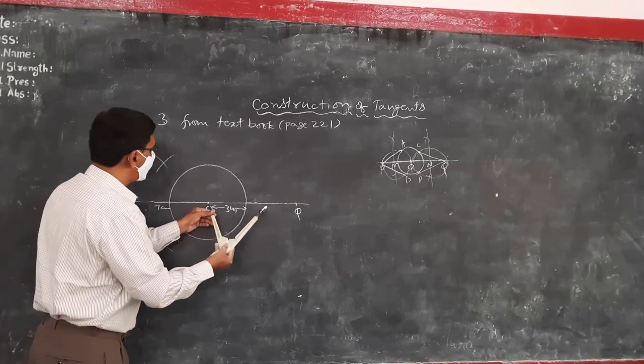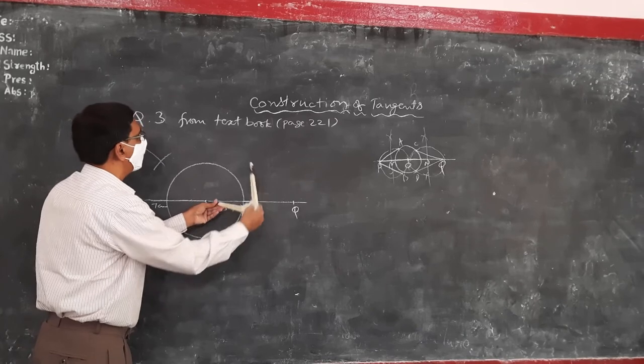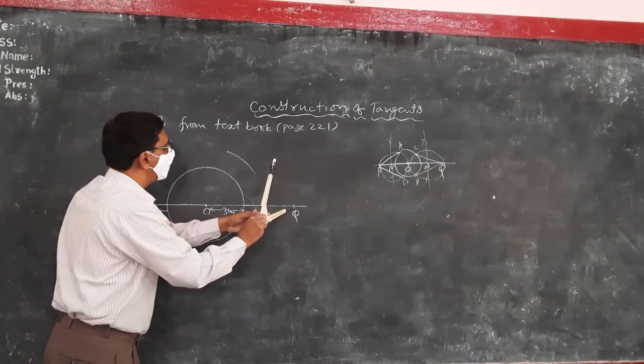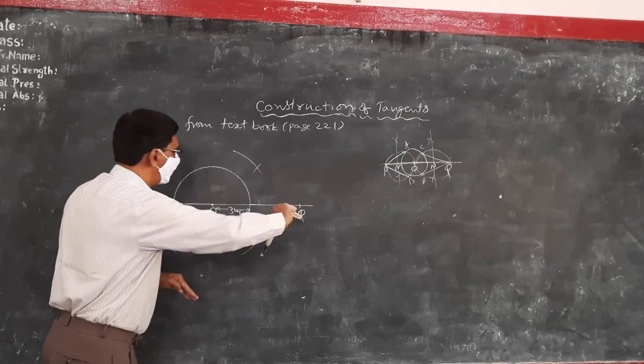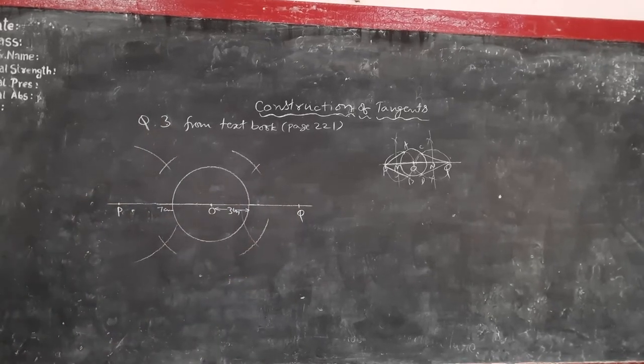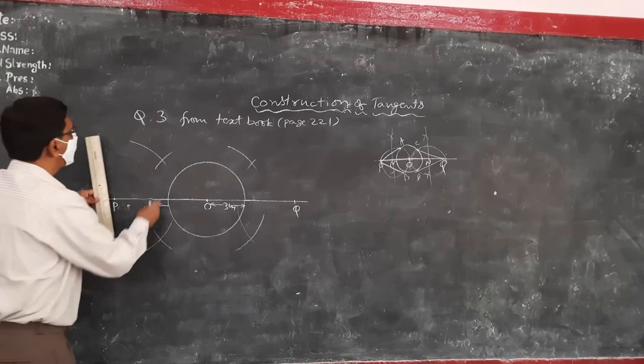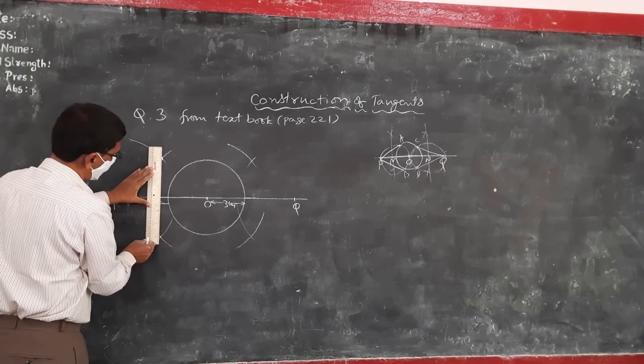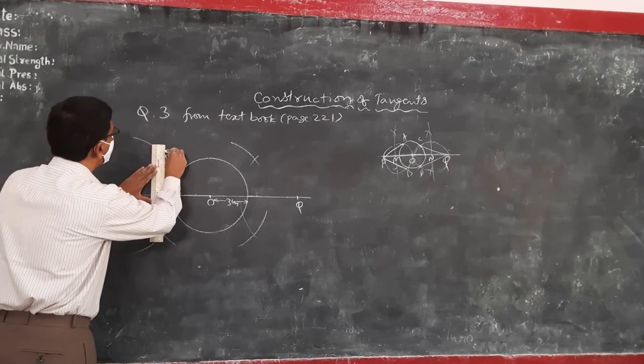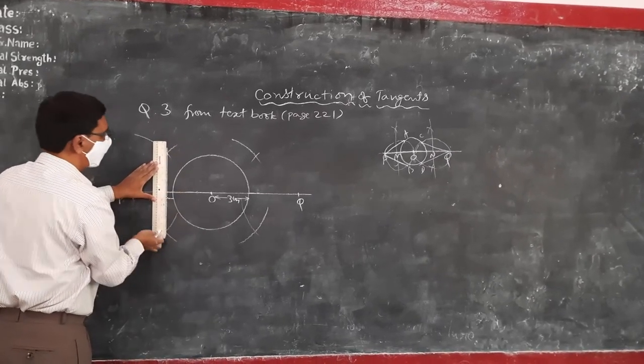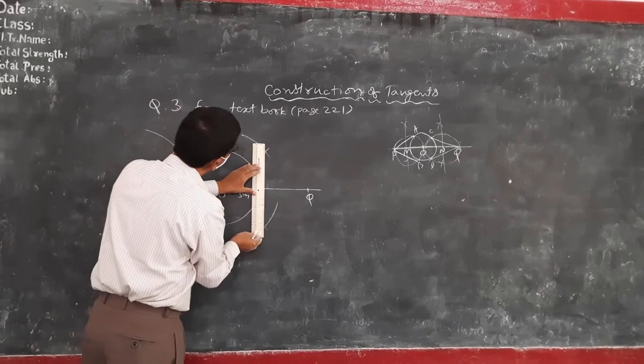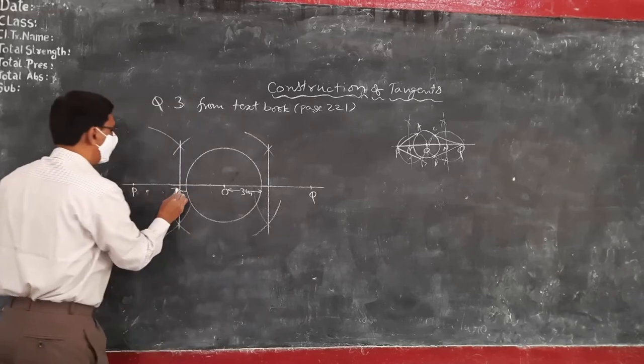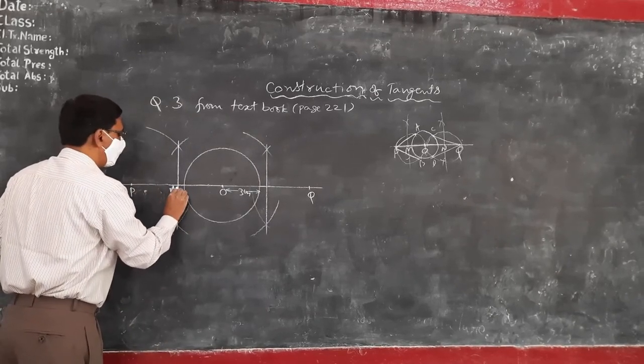And for OQ also you have to do the same way. Construct two arcs, and then join them to find the perpendicular bisector.